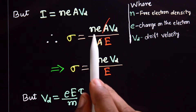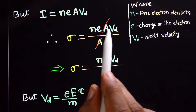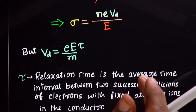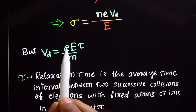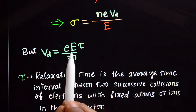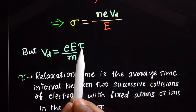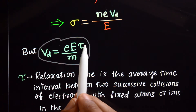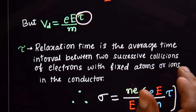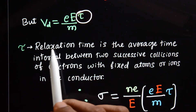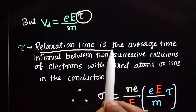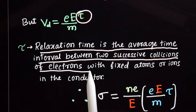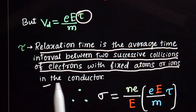Substituting, sigma equals n·e·A·v_d divided by A·E. The area A cancels out. We then substitute the drift velocity expression: v_d equals e·E·τ divided by m, where τ is the relaxation time — the average time interval between two successive collisions of electrons with the fixed atoms or ions in the conductor.